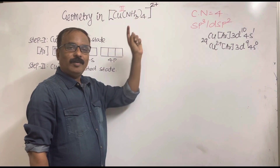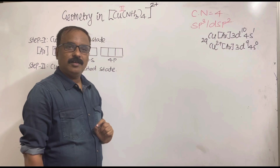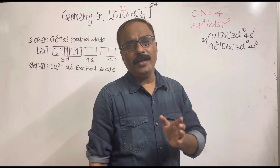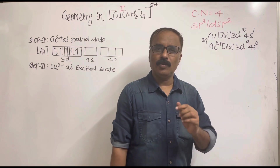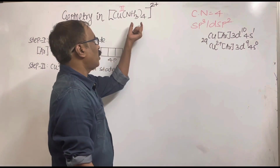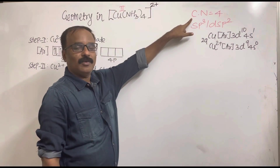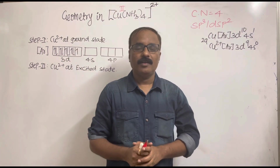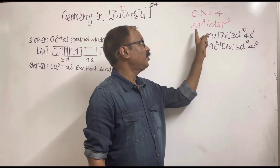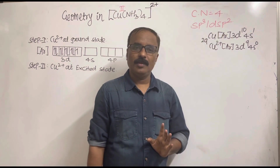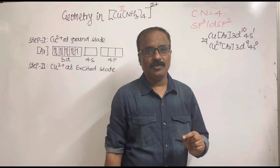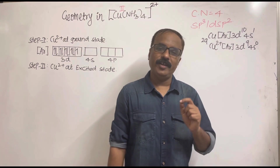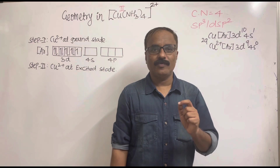Ammonia is a monodentate ligand, and the coordination number of the metal in the case of a monodentate ligand is equal to the number of ligands. So coordination number is four. When coordination number is four, hybridization is either sp³ or dsp². If hybridization is sp³, geometry is tetrahedral; if dsp², geometry is square planar.